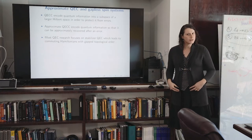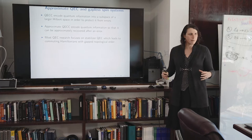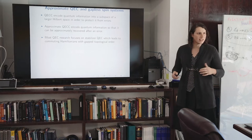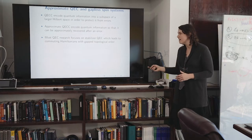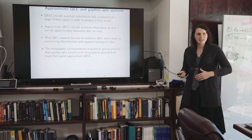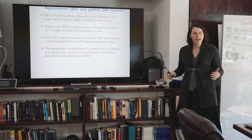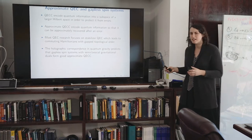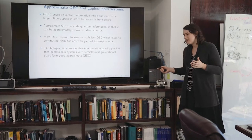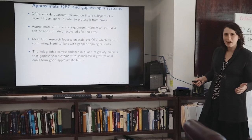We have some existing examples in the literature, but to find codes outside of the general stabilizer framework is a frontier in quantum error correction — that's why there's an emphasis on gaplessness in the title of my talk. The holographic correspondence predicts that certain gapless spin systems, those which have semi-classical gravitational duals, will have good approximate quantum error correcting codes in their ground space.